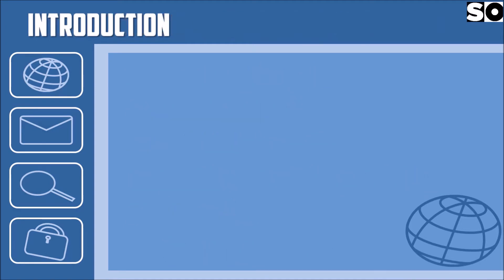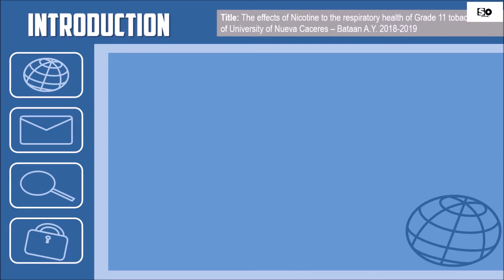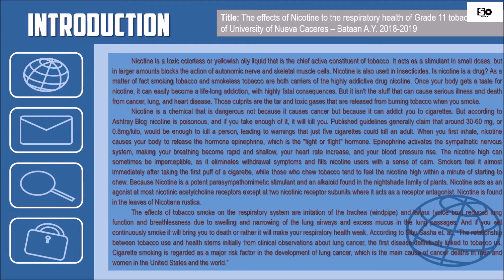Here is an example of a research introduction. In this example, the research title is The Effects of Nicotine to the Respiratory Health of Grade 11 Tobacco Users in the University of Nuevo Caceres, Bataan, Academic Year 2018-2019. In the introduction example, we can see that the researcher introduced what their research is all about by first giving some background about what nicotine is, what respiratory health is, what tobacco is, as well as the effect of tobacco on the respiratory health of the users.